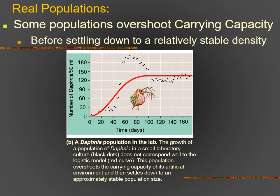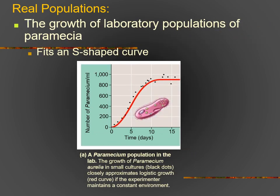Here is some real-world data — done in a lab, but still real data. You can see the population actually goes up, overshoots carrying capacity, and then begins to stabilize with carrying capacity right about here, maybe around 130 to 140. That's not always going to happen though. Sometimes the curve is a much better fit and barely overshoots carrying capacity at all. This is a very nice curve for paramecium — you can see the carrying capacity is right about at 900 and it fits perfectly within that S-curve.